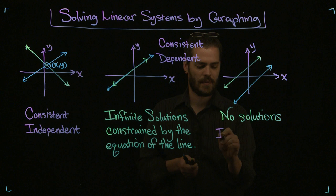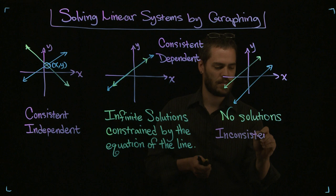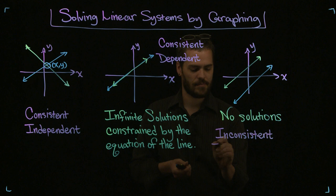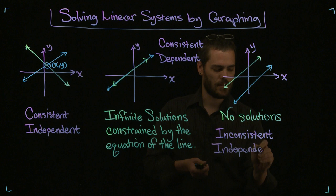Since there are no solutions, we're going to say this is inconsistent. And we're also going to say that the lines are independent.